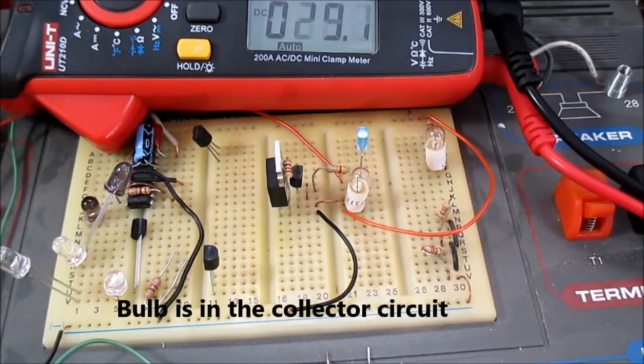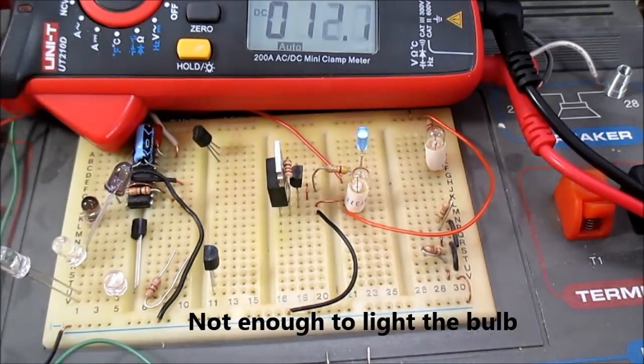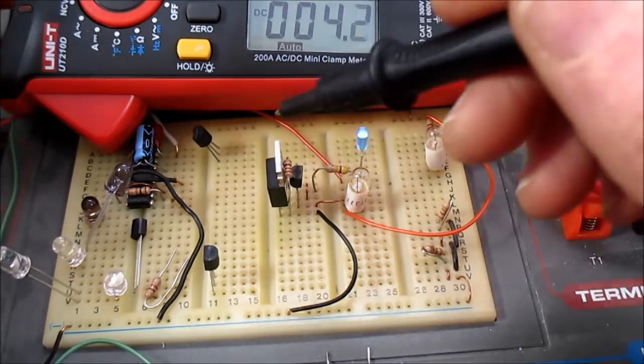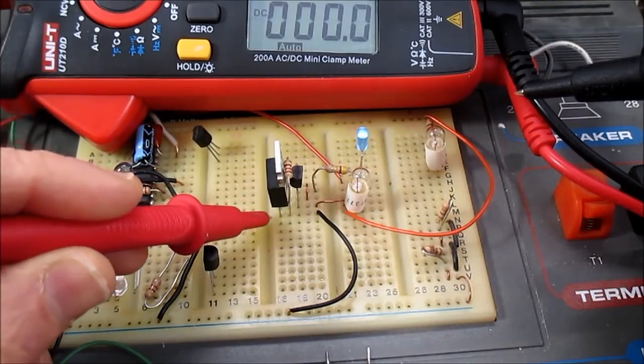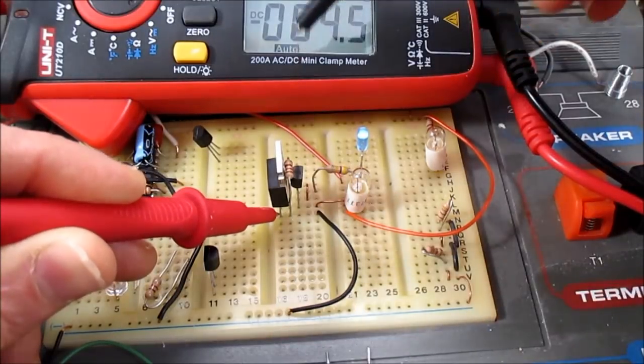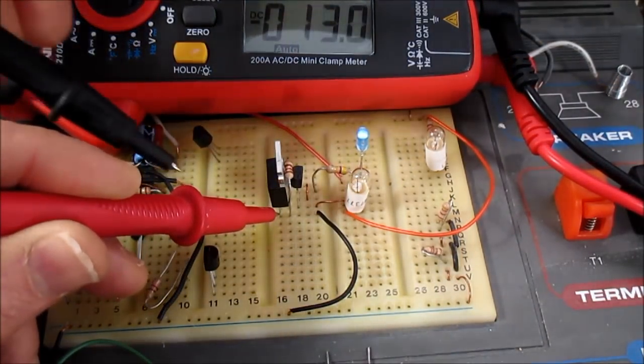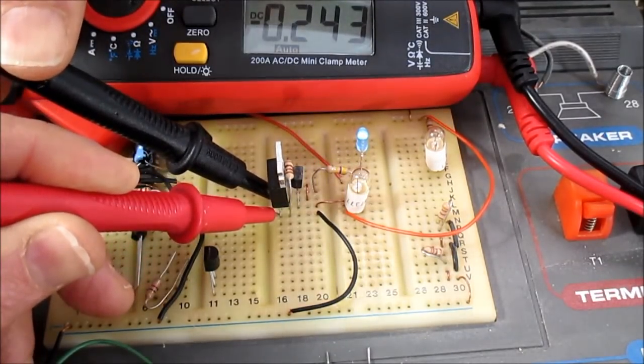So how much current is going through the circuit? Well, if I measure the voltage drop across the speed-up resistor, which is that one right there, which is across the base-to-emitter junction of the output transistor...